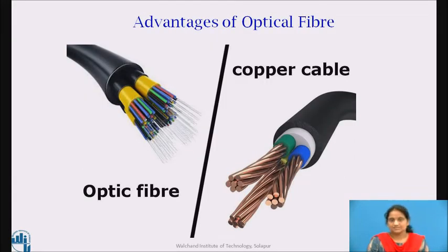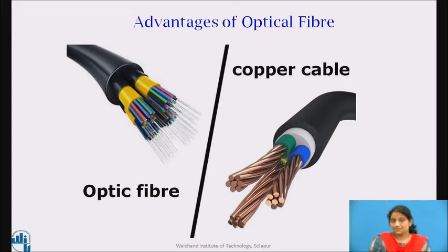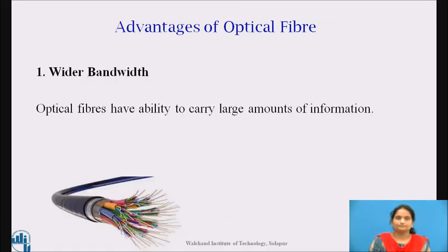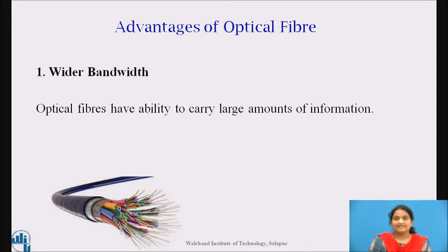Now let us discuss different properties that make fiber optic cable superior to conventional copper cables. The first advantage is wider bandwidth. Fiber provides more bandwidth than copper and has standardized performance up to 10 gigabytes per second and beyond. More bandwidth means that fiber can carry more information with far greater efficiency than copper wire.